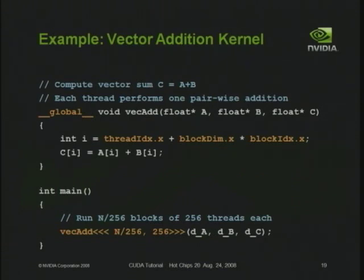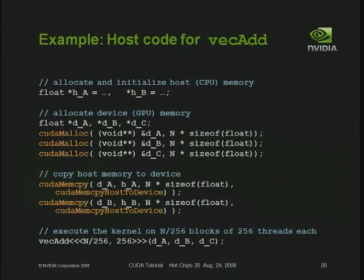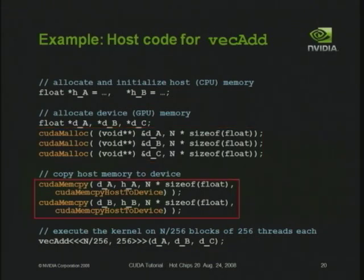The part of the program I didn't show earlier is the host code that sets things up. Assuming the arrays and n are already in host memory, to get them onto the GPU I first need to allocate memory using CUDA malloc, then memcopy the data from host to device. Once the data is in global memory visible to the GPU, I can invoke the kernel. After computing, an additional memcopy at the bottom copies results back to the host.